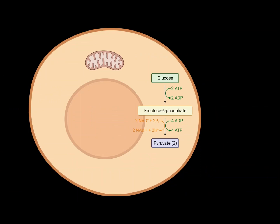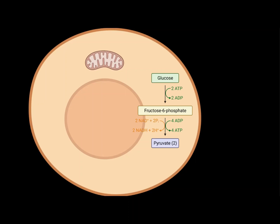To understand why this is significant, let's first learn how a normal cell gets energy. Cells normally make energy through cellular respiration, which starts with glycolysis — breaking down glucose into ATP and NADH molecules. The ATP stores energy itself,